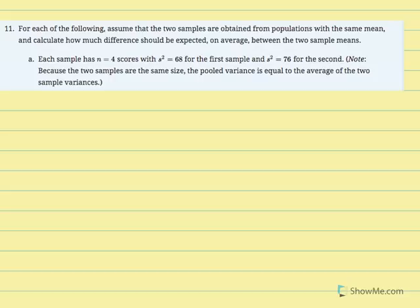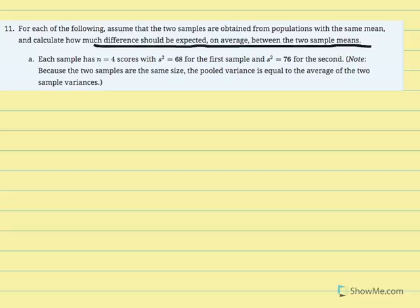Number 11: for each of the following, assume the two samples are obtained from populations with the same mean — indicating the null, mu1 minus mu2 equals zero, or mu1 equals mu2 — and calculate how much difference should be expected on average between two sample means. This is essentially asking us to calculate the estimated standard error of the mean difference. You need to get used to being asked for these statistics without explicit wording.